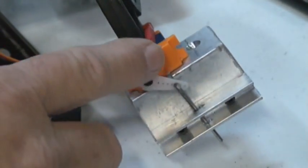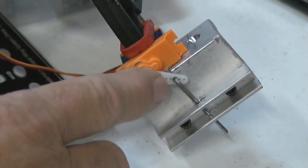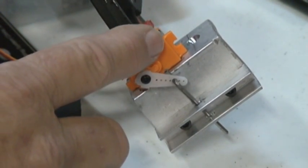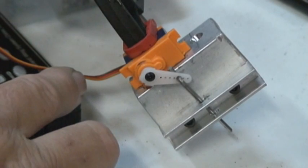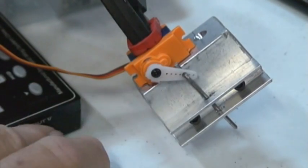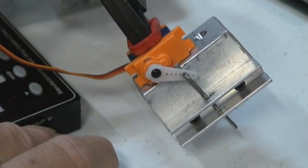The way that I have the servo mounted, as the arm pulls up, it actually pushes down on the aluminum bracket, so there's not very much pressure on the servo that's going to allow it to come up.